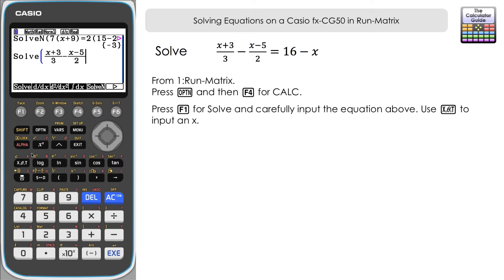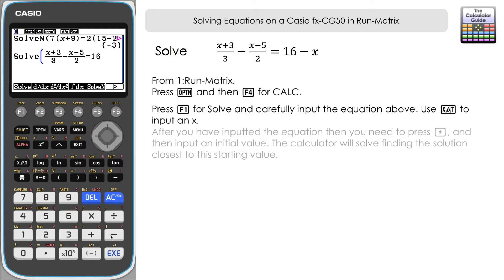When we've inputted that, what we need to do is add a comma and define an initial value that the calculator can use to solve from. Now with this particular example, again there's only one solution, and if you're not sure where to start, then the simplest value to go for is zero. So if we put zero in as a value and then close the bracket and execute, then it's found our solution here which is 15.